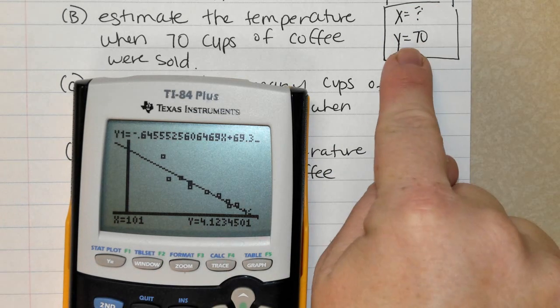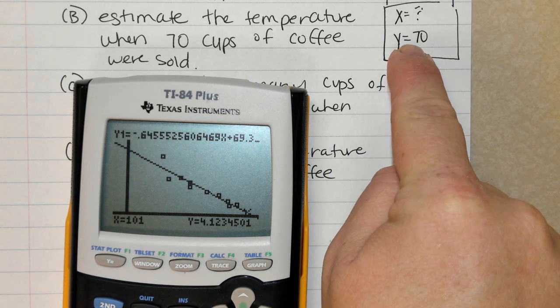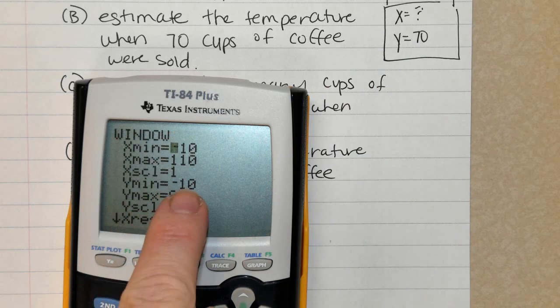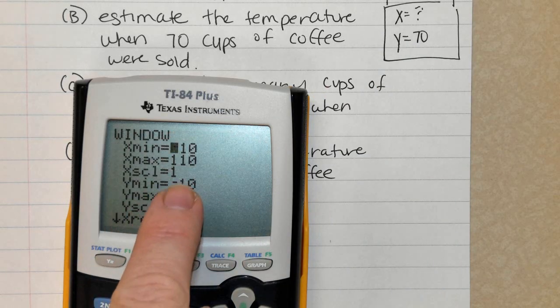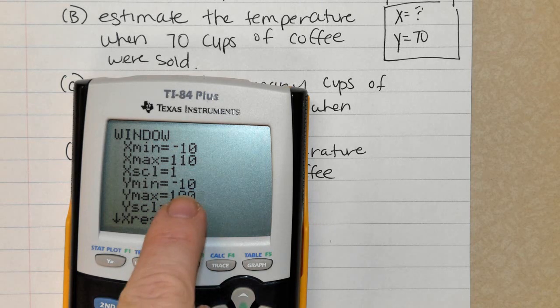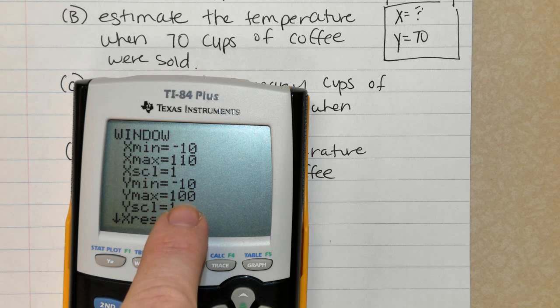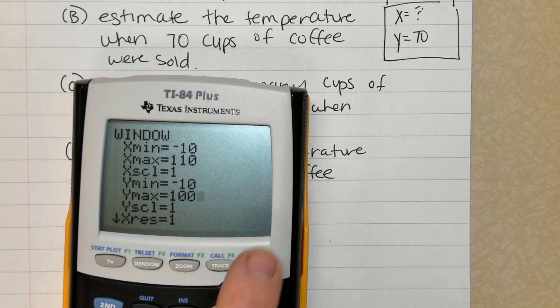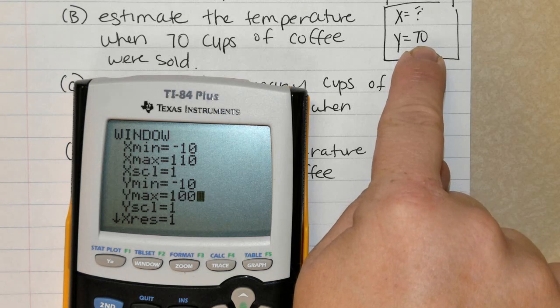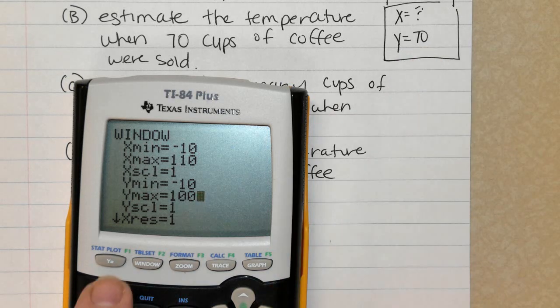Before I do anything, I need to find out right now is 70 part of in the y range. So hit Windows. And I can see, yep, 70 is in this range. I may want to go just a little bit higher here to make sure I can see everything. But 70 is in the range from negative 10 to 100. Okay, so when you're given a y value, there's a couple different ways you can do this. But here's what I think is the easiest.